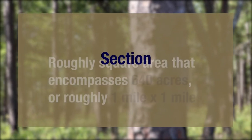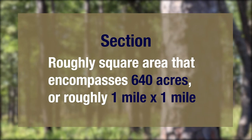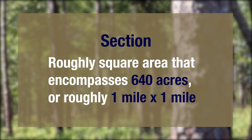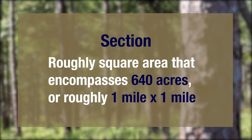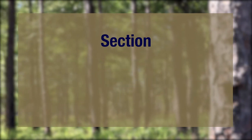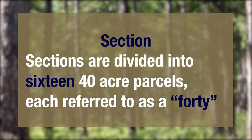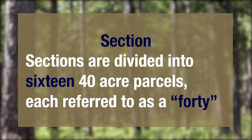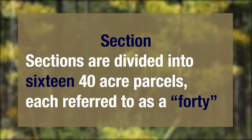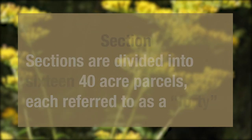Section: a roughly square area that encompasses 640 acres, or roughly a mile by a mile. Sections are divided into 16 forty-acre parcels, each referred to as a "forty."